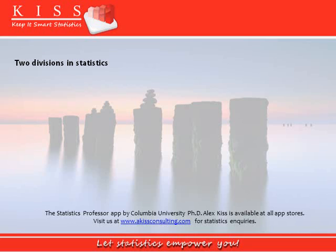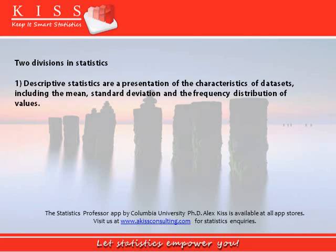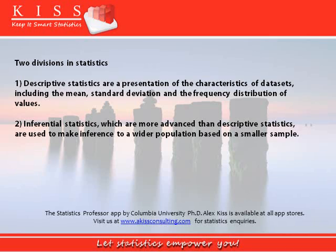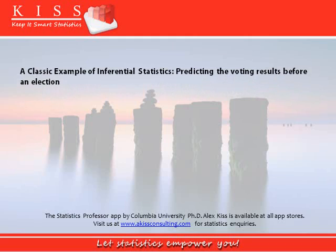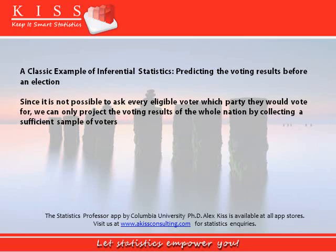There are two divisions in statistics. Descriptive statistics, which are a presentation of the characteristics of a data set including the mean, standard deviation, and frequency distribution of data values; and inferential statistics, which are more advanced than descriptive statistics and are used to make inferences to a wider population based on a smaller sample. So we are extrapolating our results from our small sample. A classic example of inferential statistics is predicting voting results before an election. Since it is not possible to ask every eligible voter which party they would vote for, we can only project the voting results of the whole nation by collecting a sufficient sample of voters.